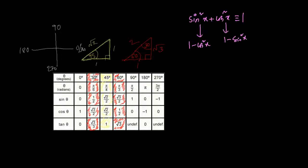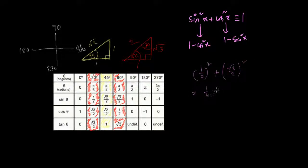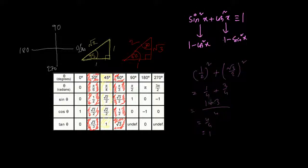For example, taking sine(30°) = 1/2 and cos(30°) = √3/2: sin²(30°) + cos²(30°) = (1/2)² + (√3/2)² = 1/4 + 3/4 = 4/4 = 1. So sin²(θ) + cos²(θ) = 1 holds for any value.